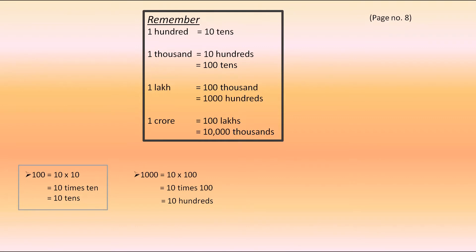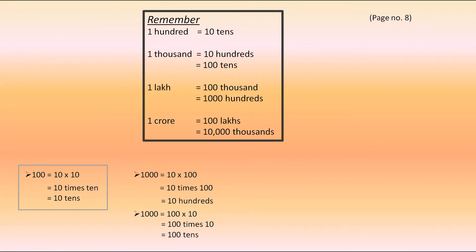Let's check: 1000 can be written as 100 into 10. This means 100 times 10, so 1000 can be equal to 100 tens.